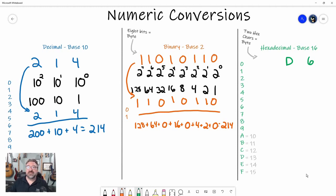So what does that mean? Decimal 214 is equivalent to binary 11010110. Awesome! Now, there is a third numbering system we're going to talk about: hexadecimal.